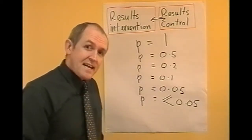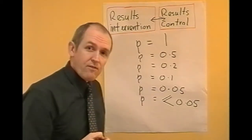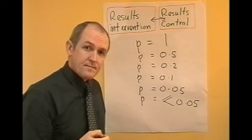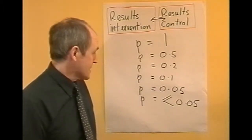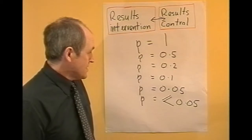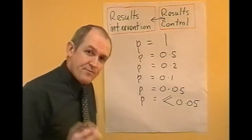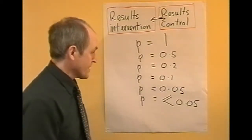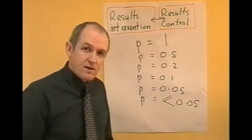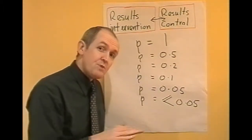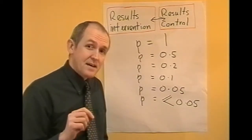If the p-value is greater than 0.05, it's as if the results are exactly the same. So if a researcher claims to have found a difference between the two groups but the p-value is greater than 0.05, then he hasn't — he must assume that the results are actually exactly the same.